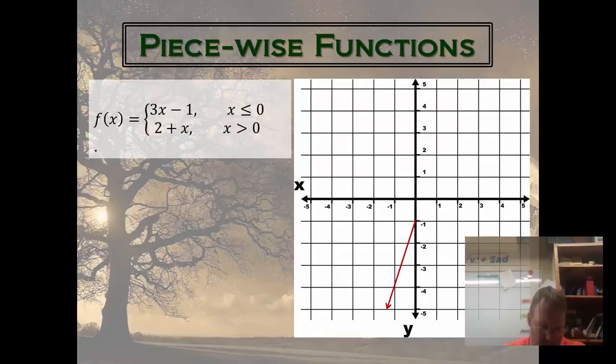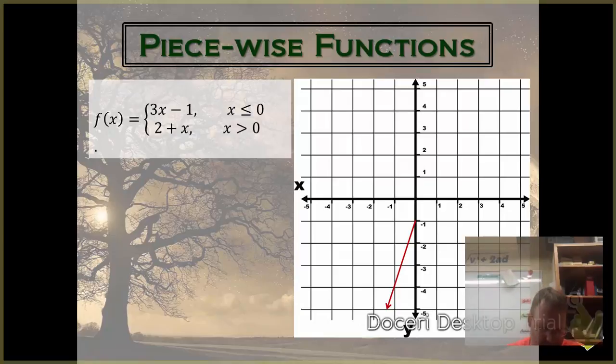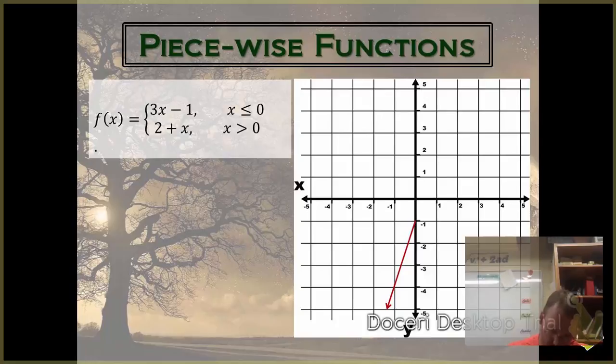Alright, now, the second part for all the values that are greater than zero is 2 plus x. Okay, well, my y-intercept for that is 2. My slope is 1, so from there, I'm going to go up 1 over 1 all the way. And so, that graph would look like that.